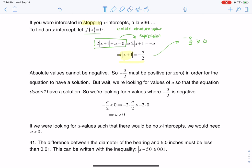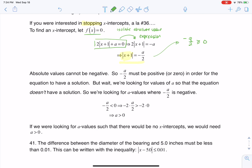So if negative a over 2 means x-intercepts exist, then x-intercepts would not exist which is what we're looking for if the opposite is true. And what is the opposite of something being greater than or equal to 0? Well it's that thing, in this case negative a over 2, being less than 0.